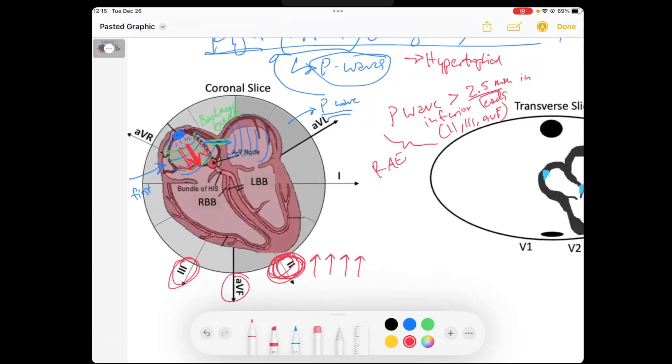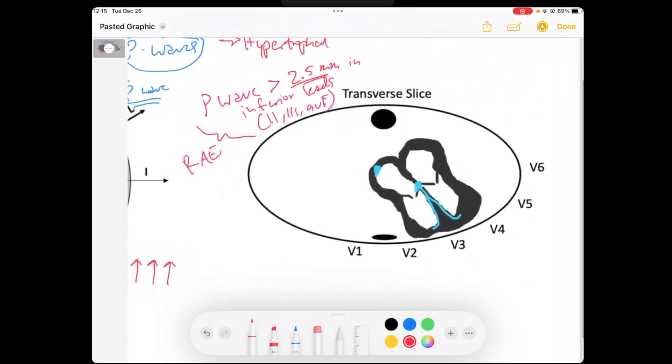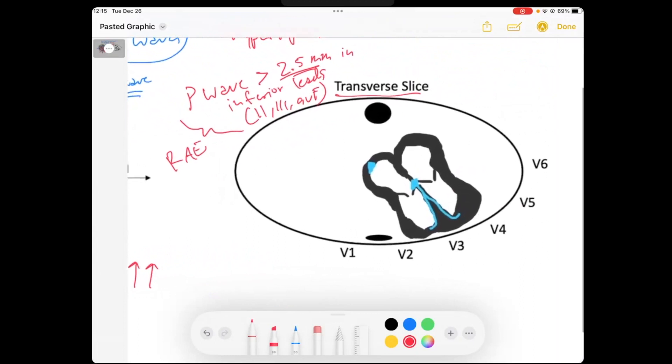We can also see, if we look at the transverse leads or our precordial leads, this is a transverse slice through the body. These are where the leads are located on our chest wall. That when this SA node fires, the right atria is going to depolarize. If the muscle of the right atria that I'm kind of drawing here in blue, if they're thickened and really, really strong and enlarged,